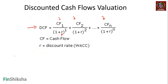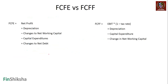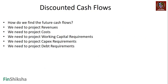We are now going to extend our discussion in terms of how do we identify the cash flow. We have already seen the formula for FCFE versus FCFF. We start with net profit, add depreciation, adjust for changes in net working capital and capital expenditures, and add net debt change for FCFE. For FCFF, we start with EBIT, make 2-3 changes, and remove the debt change — so no change in debt is considered.